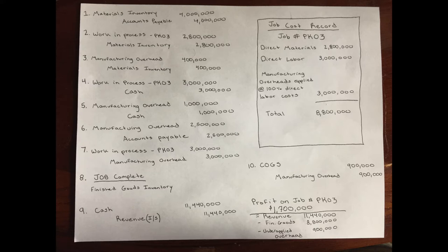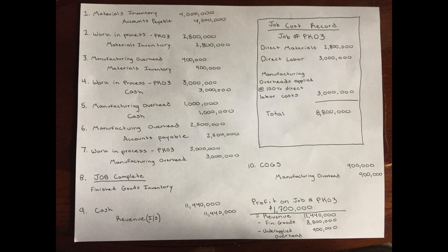For number ten, actual manufacturing overheads are $3.9 million. This is equal to indirect materials of $400,000 plus indirect labor of $1 million and other overheads of $2.5 million. Applied manufacturing overheads are $3 million. The $900,000 worth of manufacturing overheads underapplied is taken to the cost of goods sold on the income statement. Cost of goods sold is debited $900,000 and manufacturing overhead is credited $900,000. Profit on job number PK03 is $1.7 million, equal to revenue of $11,440,000 minus finished goods of $8.8 million and the underapplied overhead adjustment of $900,000.